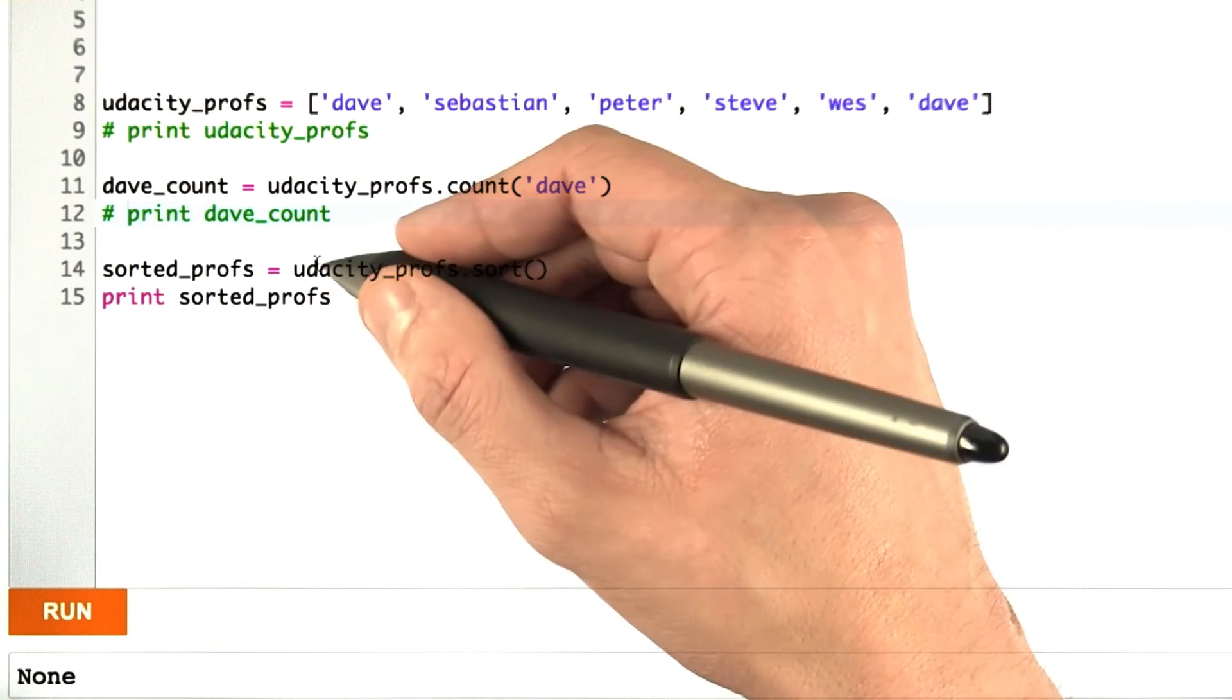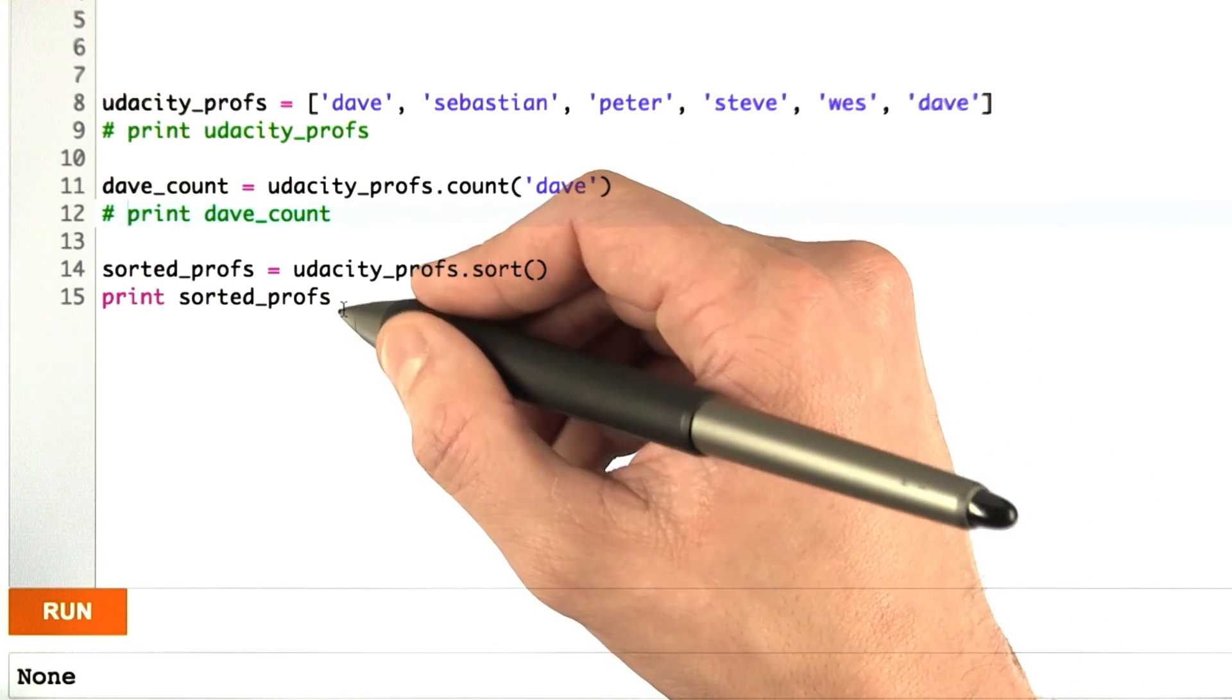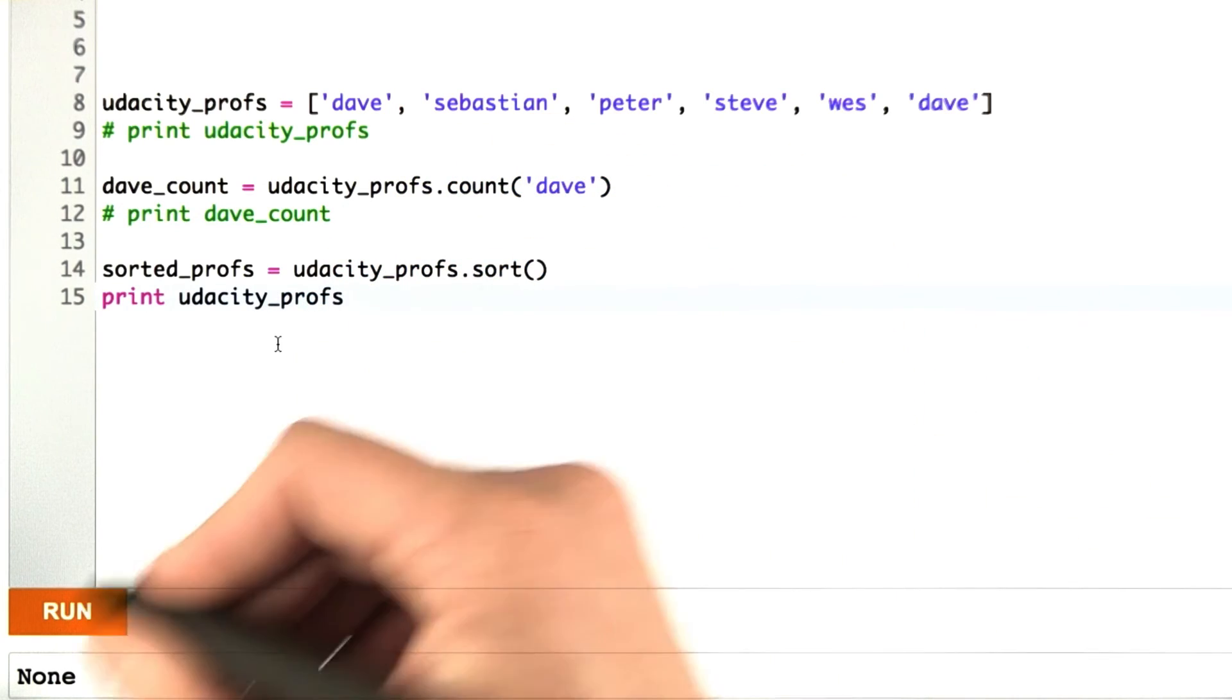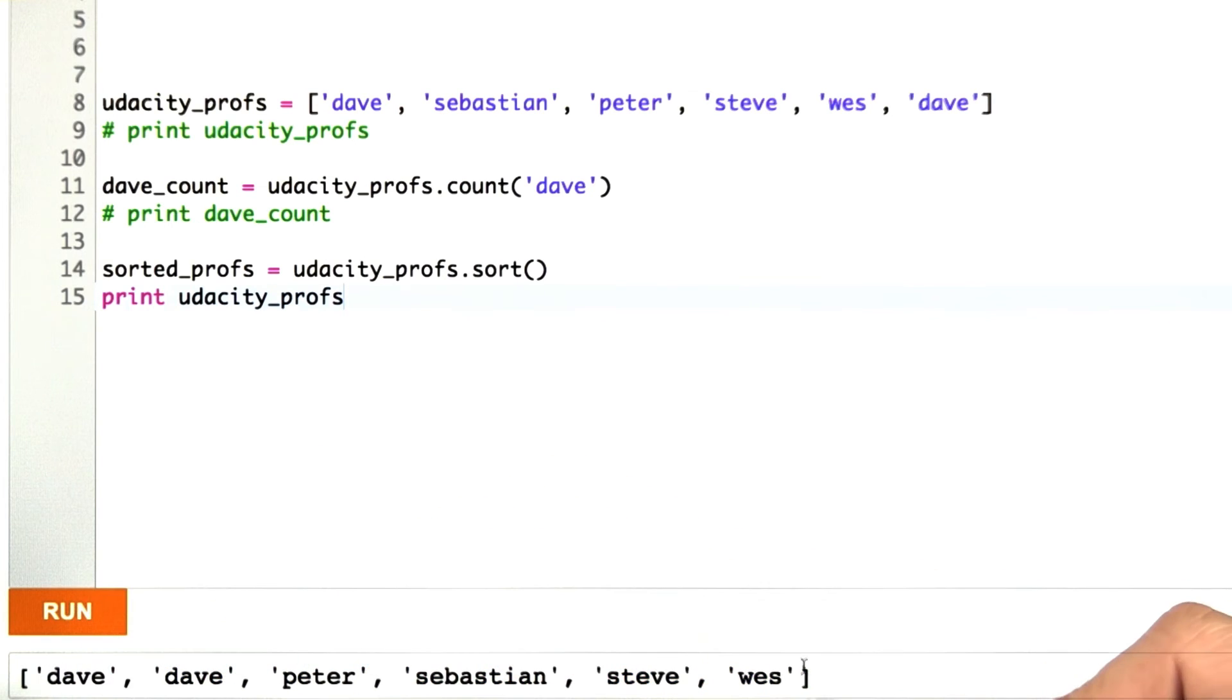In fact, since we've just sorted UdacityProfs, let's see what happens when we print UdacityProfs. And now you can see that they've been sorted in alphabetical order. Isn't mutability just wonderful?